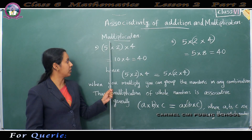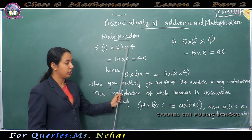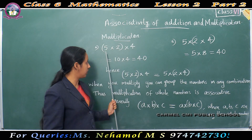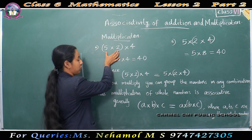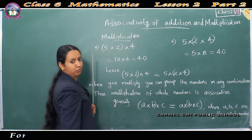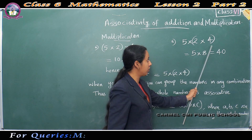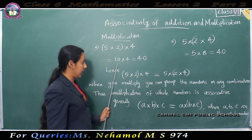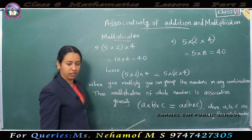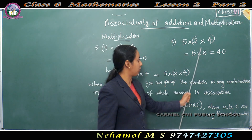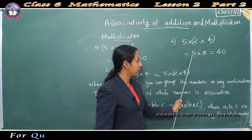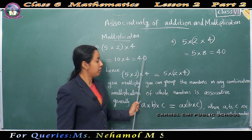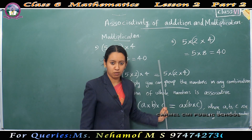Now, we can consider multiplication. Consider the example (5 into 2) into 4 and 5 into (2 into 4). The numbers are the same, but the grouping is different. In the first, we multiply 5 into 2 to get 10, then 10 into 4 equals 40. In the second, 2 into 4 is 8, then 5 into 8 is 40. Even though the grouping is different, the product is the same in both cases.